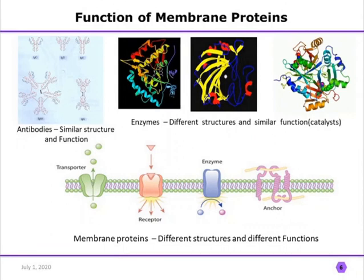Membrane proteins have different structures and different functions. They are the key players in signal transduction. The different types of membrane proteins include anchoring proteins, membrane-bound enzymes, membrane receptors, and membrane transporters. Among these, receptor proteins are the key players in signal transduction.